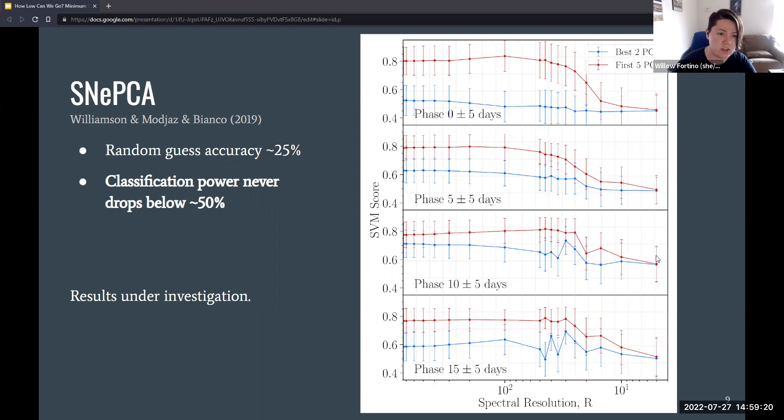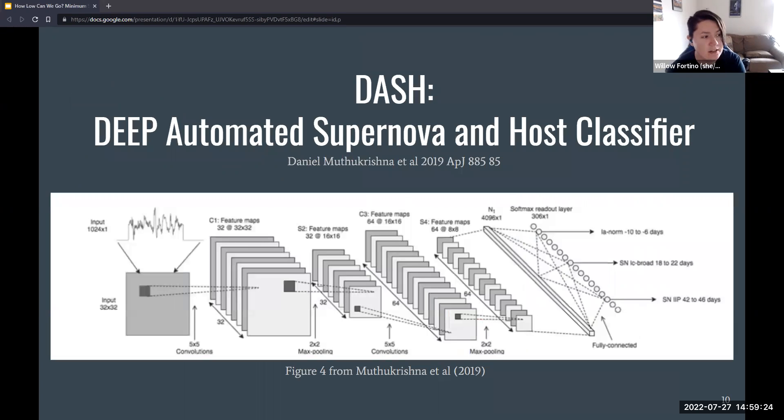The next model that we started to investigate was DASH. DASH is the deep automated supernova and host classifier. It's based on the paper, Muthakrishna et al. 2019, and this is the figure from that paper explaining the architecture. This is a neural network, a convolutional neural network, and specifically this classifier aims to not only classify supernova type, but also supernova age. And so you'll see here at the very end, at the soft max readout layer, we have 306 different classes. That's 17 different supernova types at 18 different age bins. And the way this model works is we start from an input spectra of length 1024. This gets reshaped into a 32 by 32 image. This goes through two rounds of convolutions, one densely connected layer of length 4096, and that's fully connected to the final soft max readout layer.